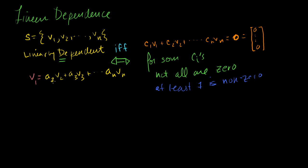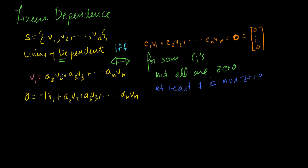This is an almost trivially easy proof. If I subtract v1 from both sides of that equation, I get 0 equals a2 minus 1 times v1 plus a2 v2 plus a3 v3 all the way to an vn. Clearly, if I can represent this vector as a sum of the other vectors, then minus 1 times v1 plus some combination of the other vectors equals zero. Which means I've satisfied the equation, and at least one of my constants is non-zero.